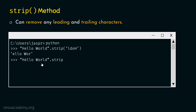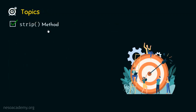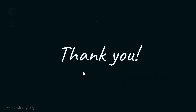Now let's type 'hello world' dot strip with L, D, O, and small h this time. Since small h is provided instead of capital H, the leading H will not be removed. So we get 'hello wor' — l and d are removed from the end, but the leading H remains because small h does not match capital H. This is all we need to understand about the strip method. Thank you for watching this presentation.